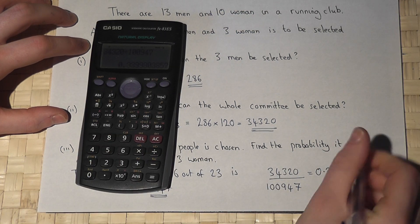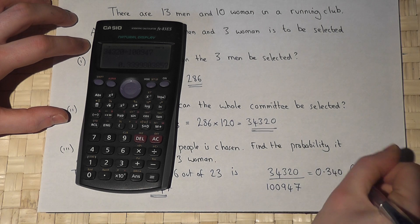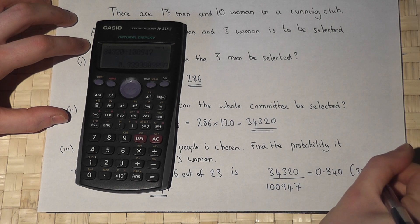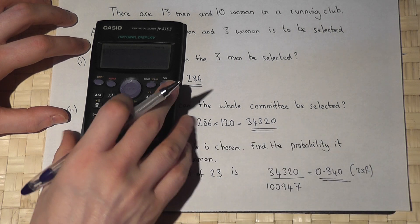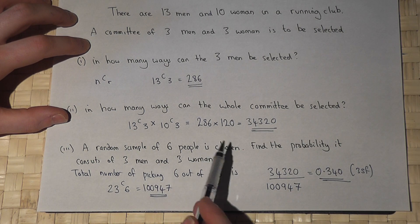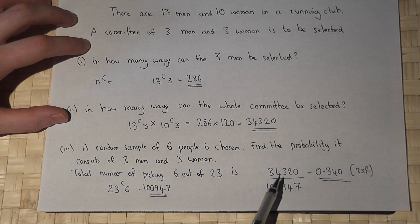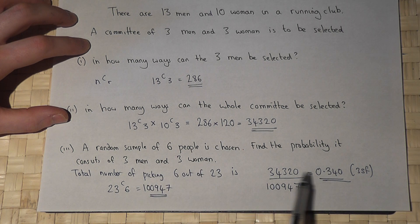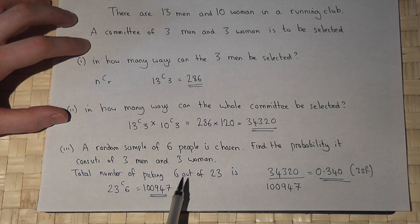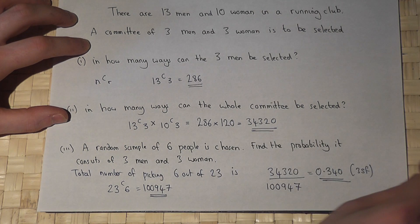So for this question, it was the number of possible ways to get three men and three women out of the total number of options for picking six out of 23.